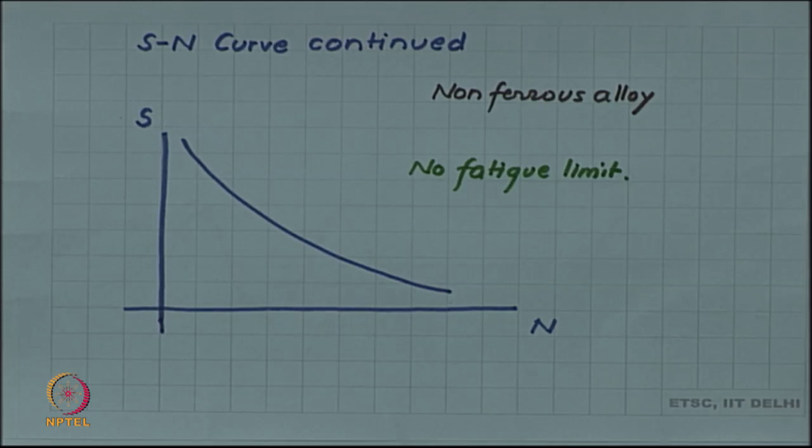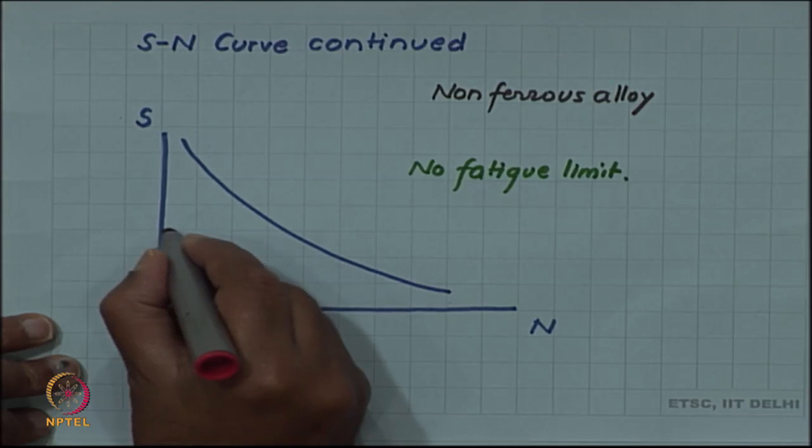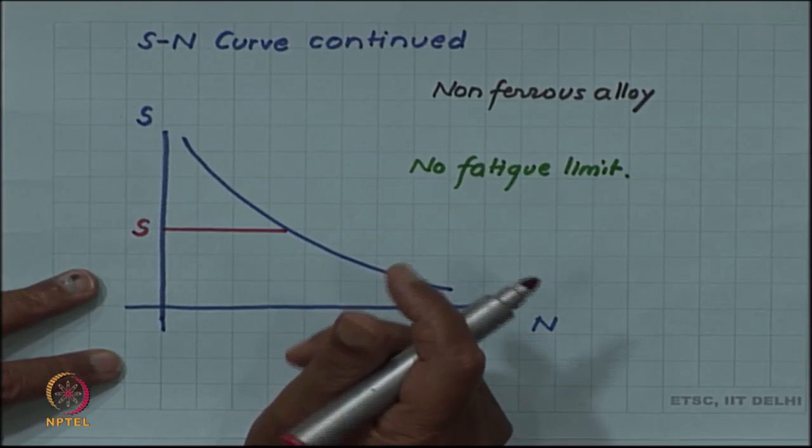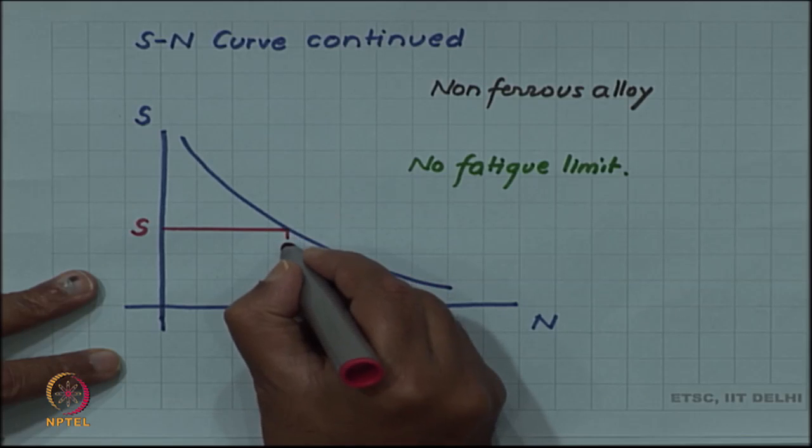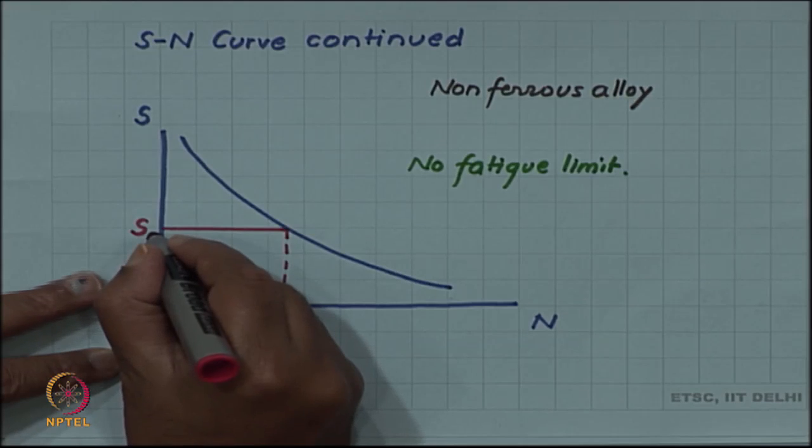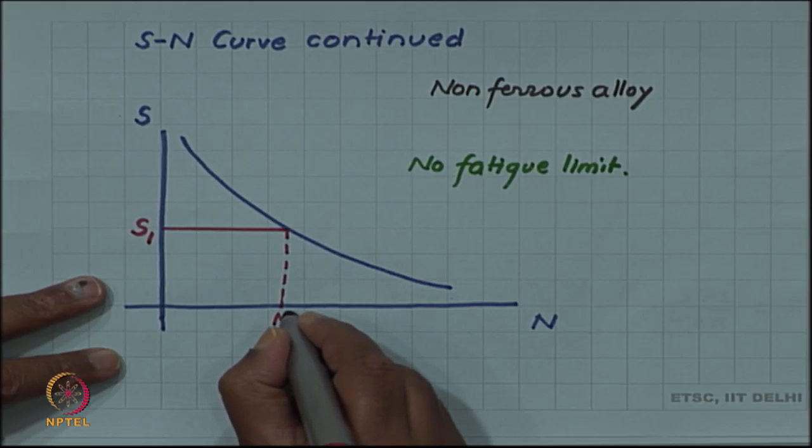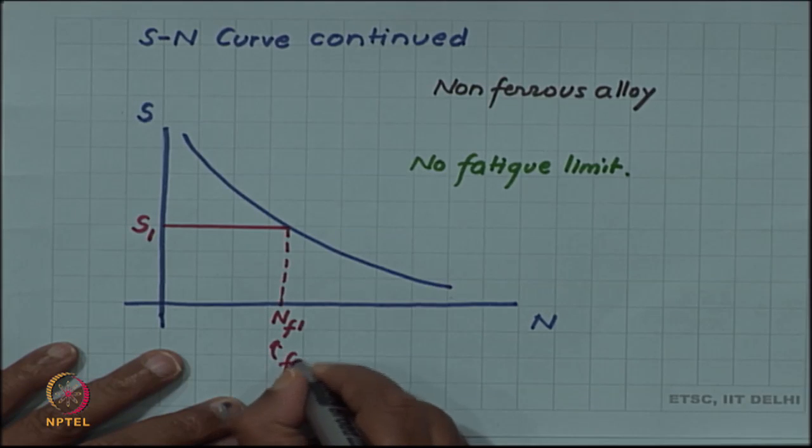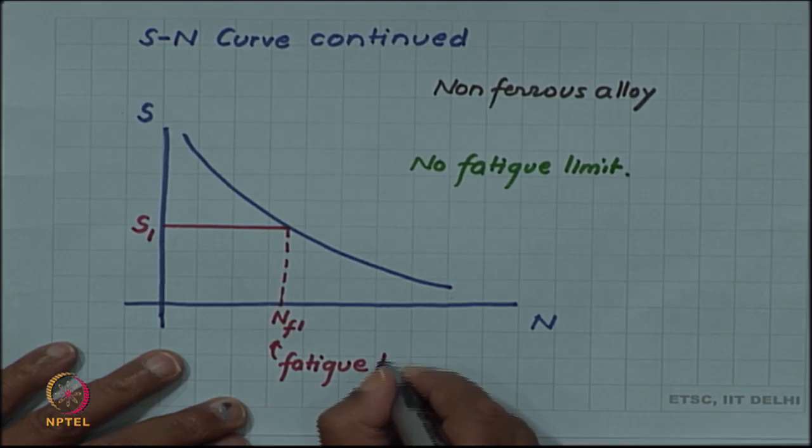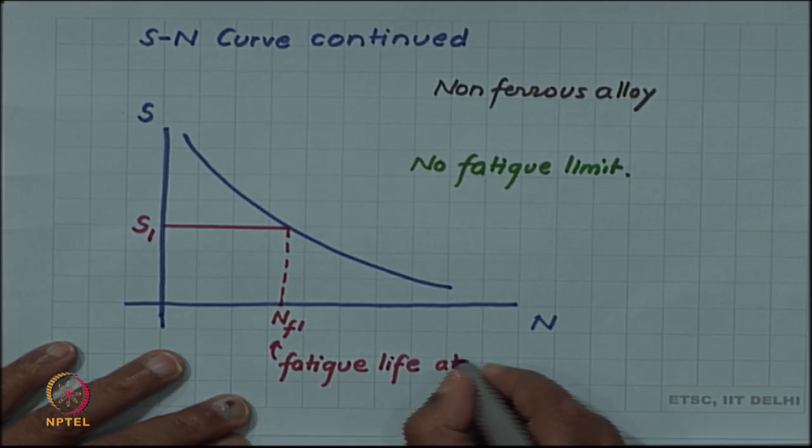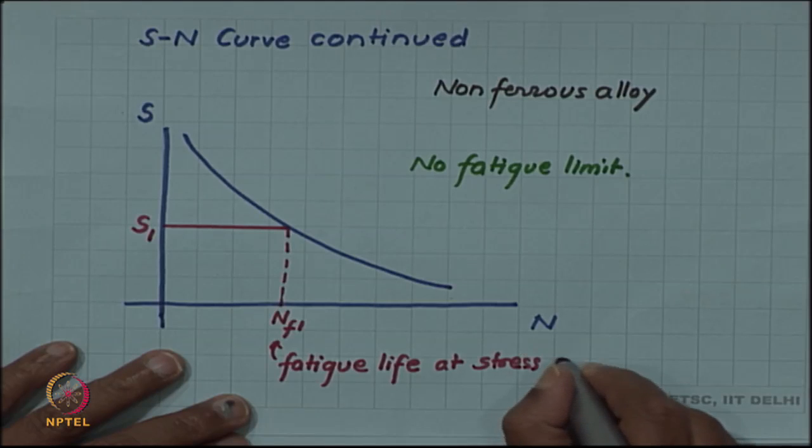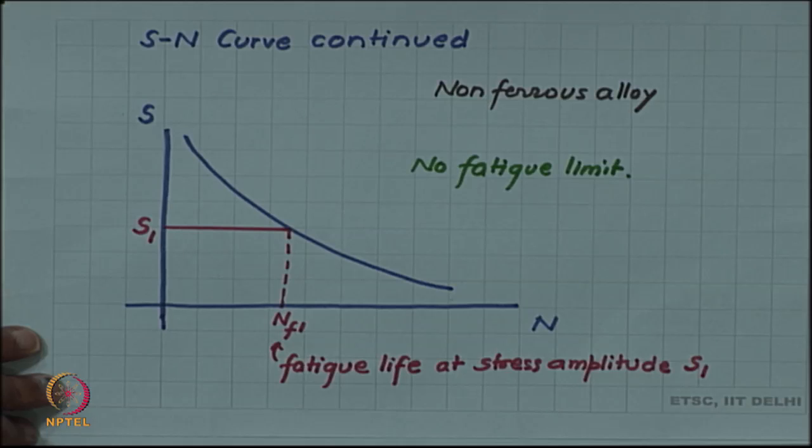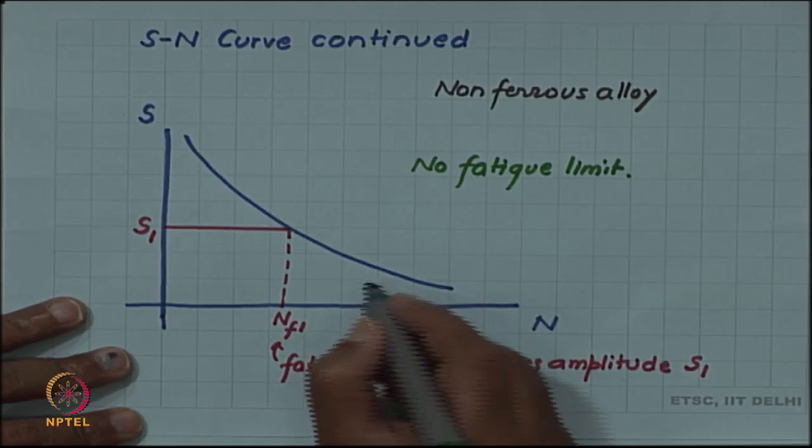This kind of curve is described by either you can have a specified value of stress amplitude. So let us say that stress amplitude S is specified to some value, let us say S1, then NF1 is called the fatigue life at stress amplitude S1.